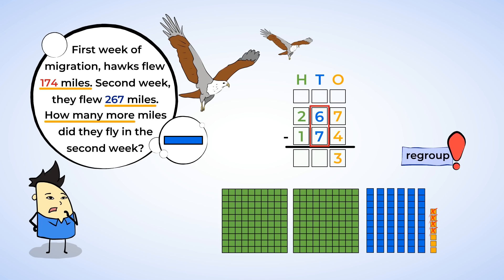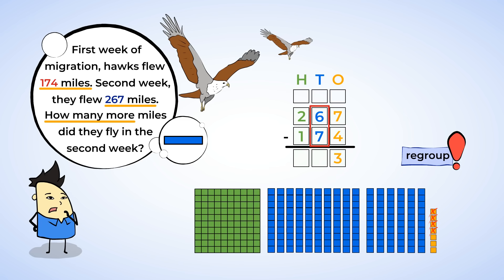You can do the same thing here with the hundreds and the tens. 100 is 10 tens. So take 100 plate and exchange it for 10 ten sticks. Now we have 100 plate left. Show that in the equation by crossing out the 2 and writing a little 1 up here. There you go! We have 16 tens sticks. Show that in the equation by crossing out the 6 and writing a little 16 above.